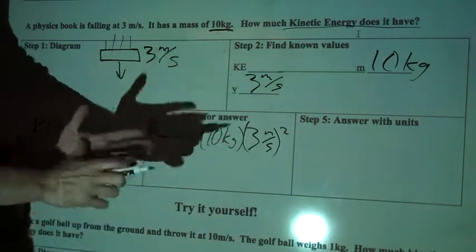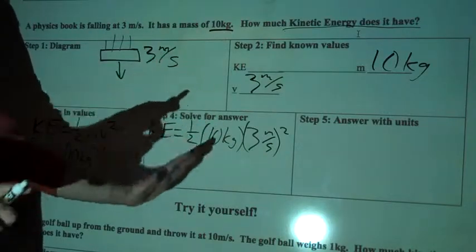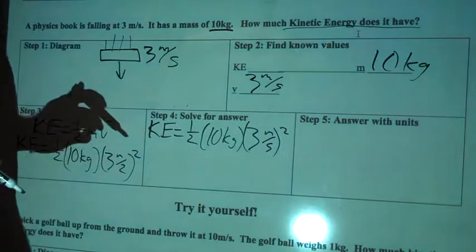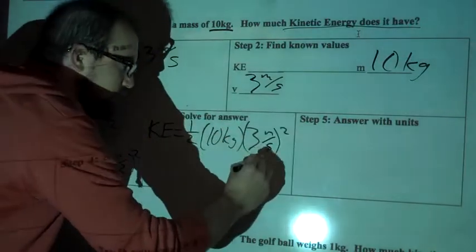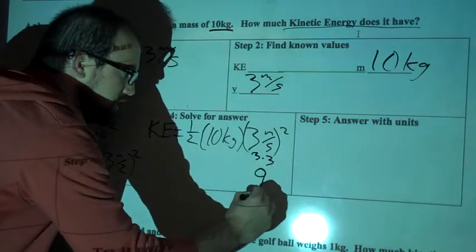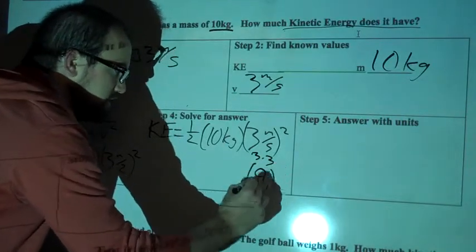So first thing you do, PEMDAS, parentheses, exponent. The first thing we do is we take care of this exponent, so 3 squared is equal to, that's 3 times 3, which equals 9. We'll put that in parentheses still.